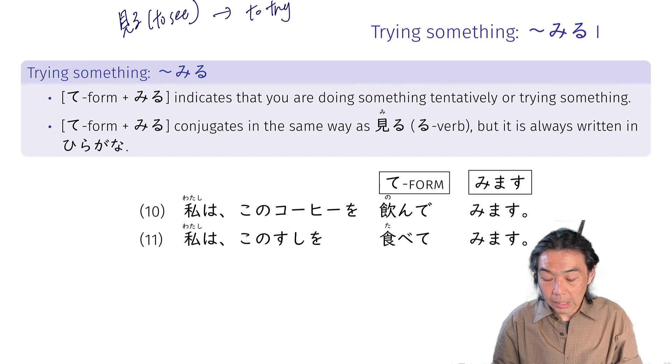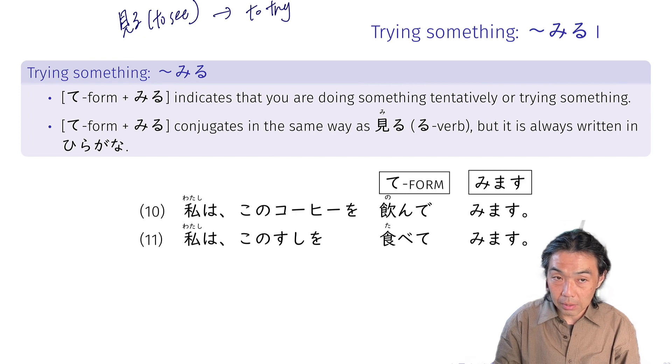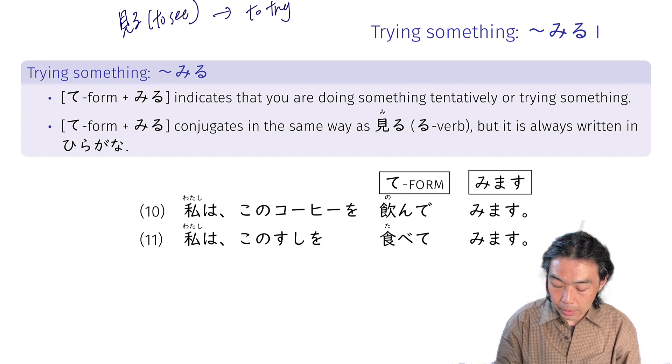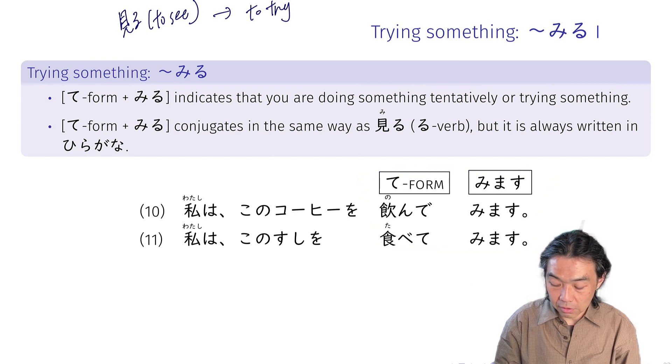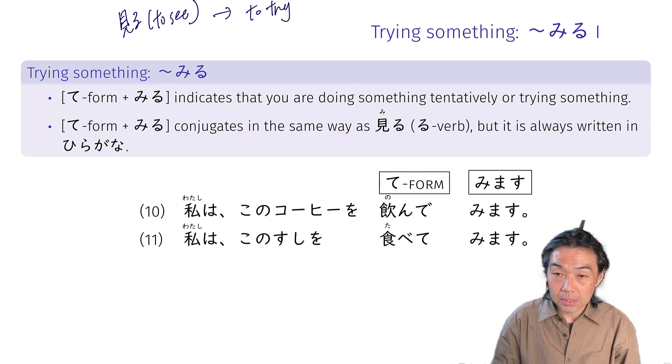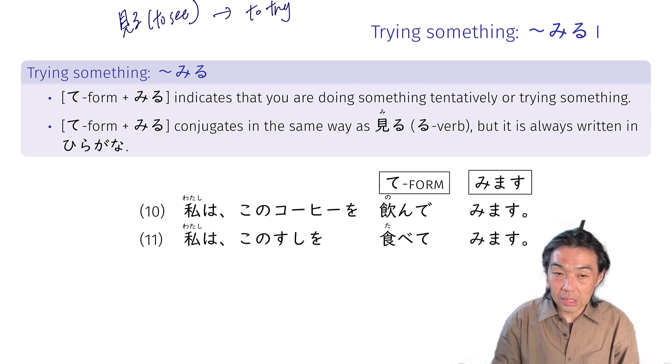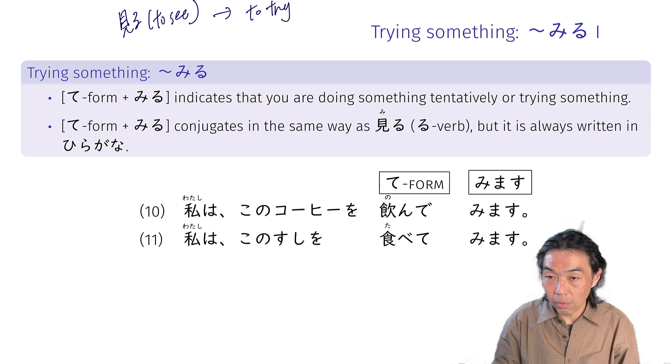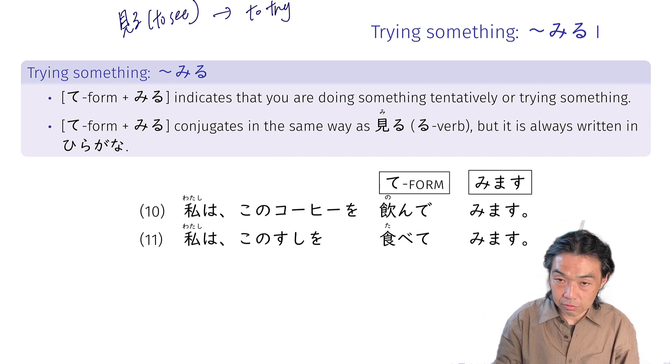And the same way, like with many other verbs, once you change to temiru, all of this part works as a ru verb. So if you want to say I don't try drinking coffee, you say watashi wa kono kouhi wo nonde mimasen. You conjugate like a ru verb.